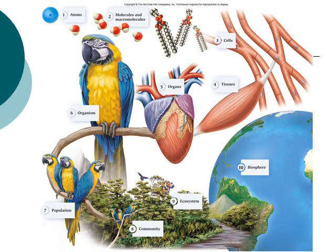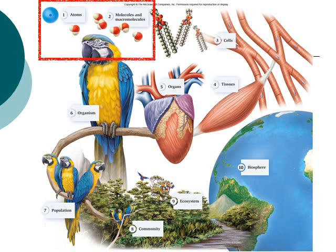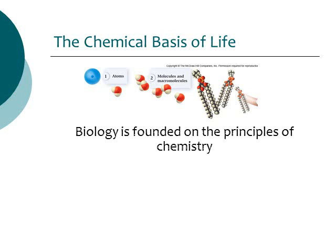Just to show you — in chapter one we talked about the ten levels of organization. Hopefully this looks a little bit familiar. If you look at the top of this diagram, we have atoms, and then those atoms come together to form molecules and macromolecules. From those macromolecules you get cells, which are the smallest, most basic unit of life. So in order to understand cells and life, we need to understand molecules and atoms. This chapter is all about looking at atoms and how they come together to make molecules.